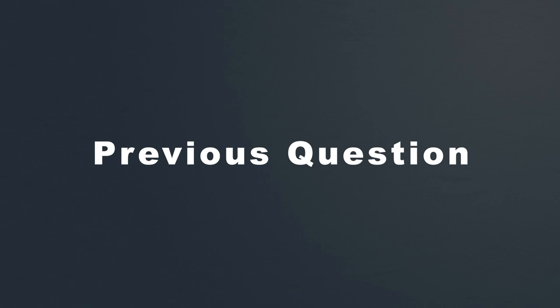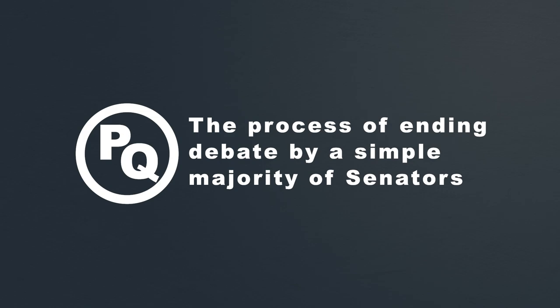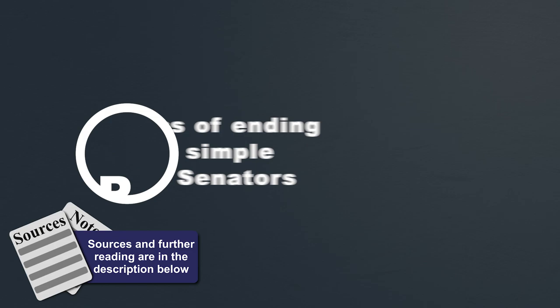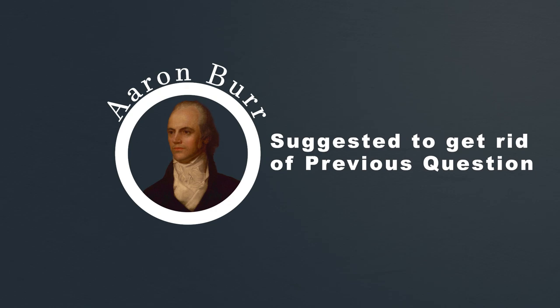Previous question was the process of ending debate and coming to a vote by a simple majority of senators agreeing to do so. In 1806, Vice President Aaron Burr suggested that they do away with this rule, therefore allowing unlimited debate in the US Senate.